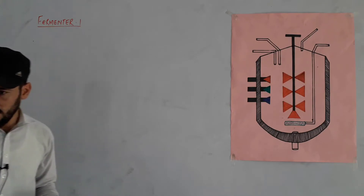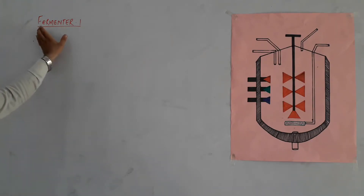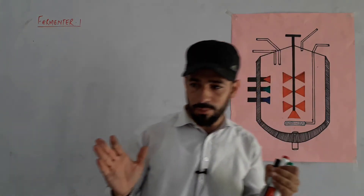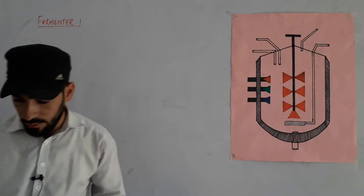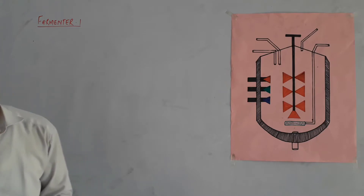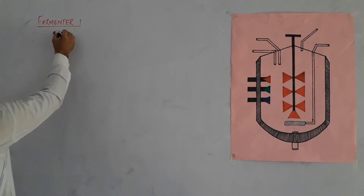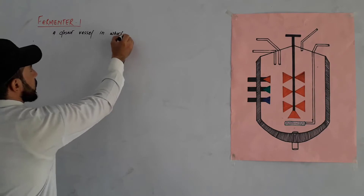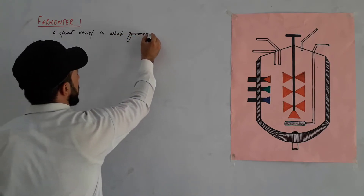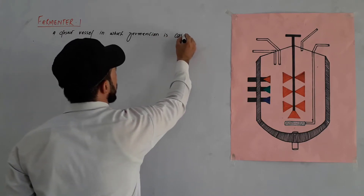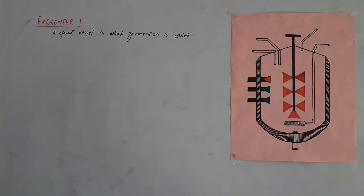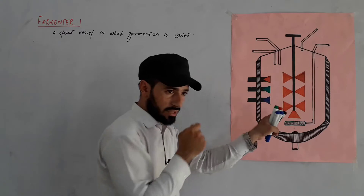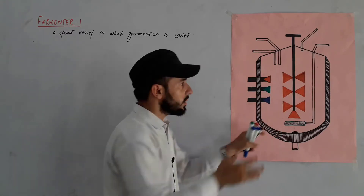The fermentation process uses a vessel — a fermenter — where fermentation is carried out. A fermenter is a closed vessel in which fermentation is carried out or performed. It is used to obtain products from microorganisms.